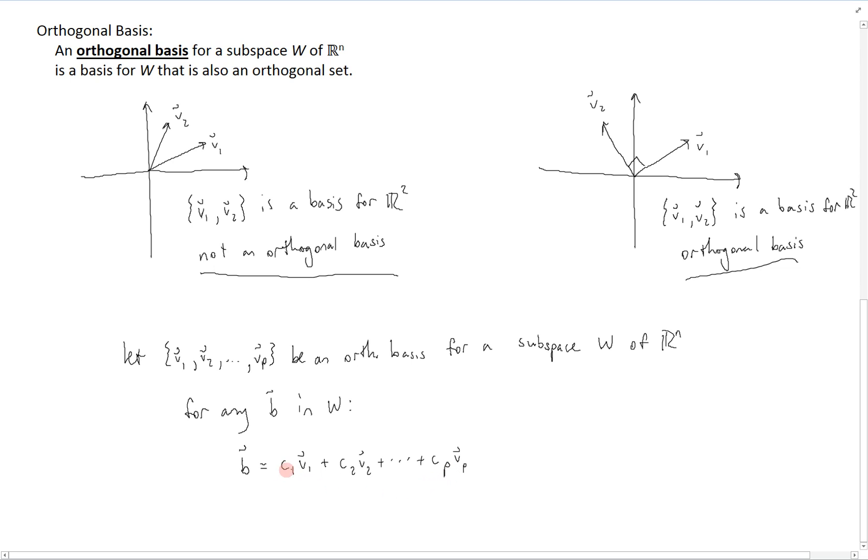And normally, in order to find these weights for any basis, we would have to solve the equation Ax equals B, where A is composed of the vectors V, the basis vectors, and we have to perform row reduction to find these. However, with an orthogonal basis, this is actually much simpler.